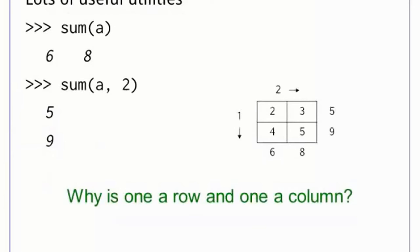Aside from traditional operators, there are also a lot of functions that operate directly on matrices. For instance, SUM can be used to add up all of the entries along one dimension of a matrix. In the first example, we are summing over each column of the matrix, which happens to be the default. In the second case, we sum over each row. Dimensions in a matrix are numbered 1 through n, and they are in the same order as the indices you use to access a single element.